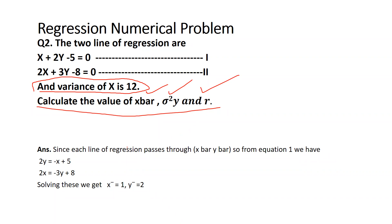So we have reached all the solutions — we have got x̄, sigma squared y, and the value of r. In that way, this is the process through which we can solve these kinds of problems when only two lines of regression have been given. I hope this video will be helpful to you. Keep watching, stay tuned.